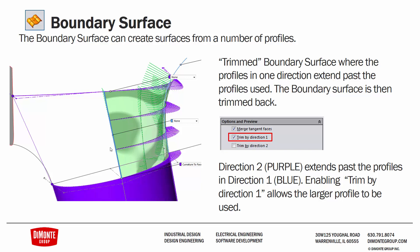Another powerful option is the trimmed boundary surface, where the profiles in one direction extend past the profiles used. Here I have one profile in direction one and a second profile further back, but the model edges in direction two are much longer than what we're actually using. You can turn on 'trim by direction one' and SolidWorks will ignore the part of the profile that's no longer needed. This is a powerful option not found in the surface loft — another reason to prefer the boundary surface over the surface loft.